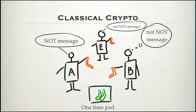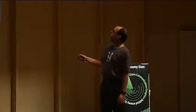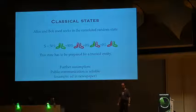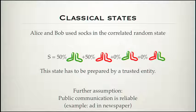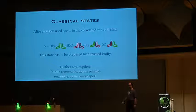That's classical crypto — one-time pad. Let's abstract from this a little bit. What they use here is that the sock pair they share is in a correlated random state. That's essential. It has to be random — it wouldn't work if all the socks were red, then there wouldn't be a code. It has to have this random element so Eve cannot guess which one they pick unless she gets a copy. And it also has to be correlated: in 50% of the probability they pick two green socks, 50% they pick two red socks, but with 0% probability they pick one red and one green.